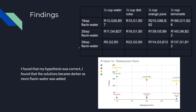I found that my hypothesis was correct. As more flavin water was added, the solution became darker — usually. This was not the case for Diet Coke, where the solution became brighter.